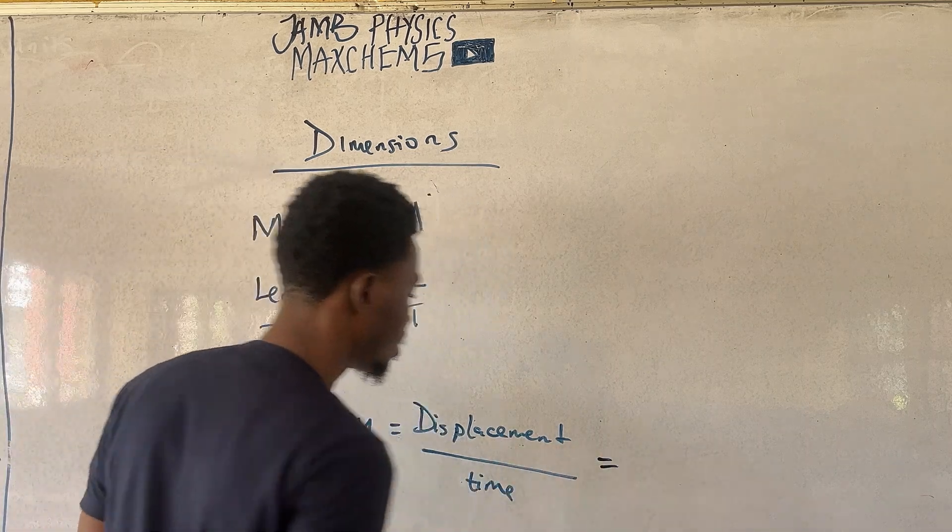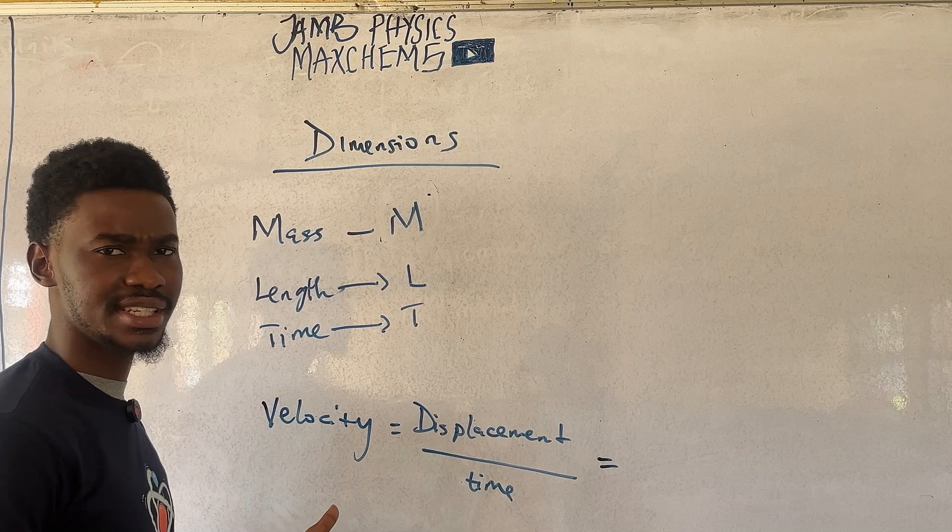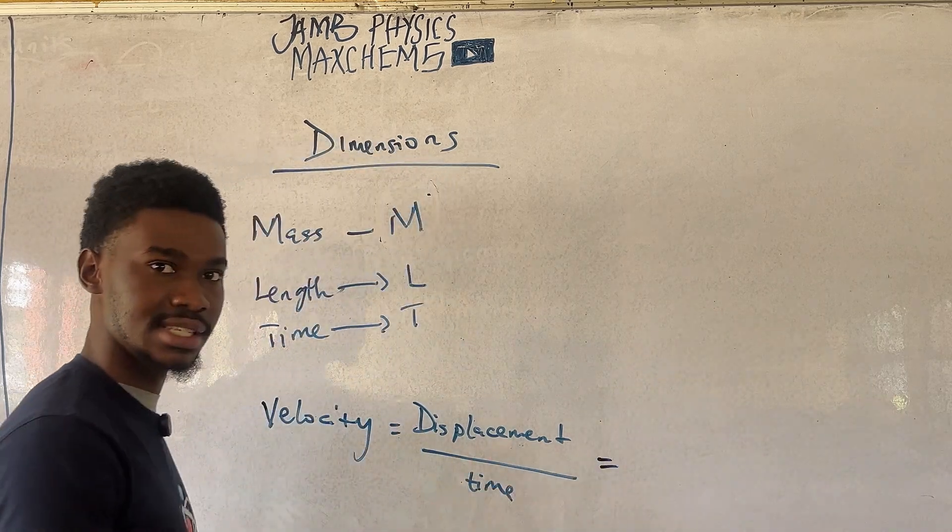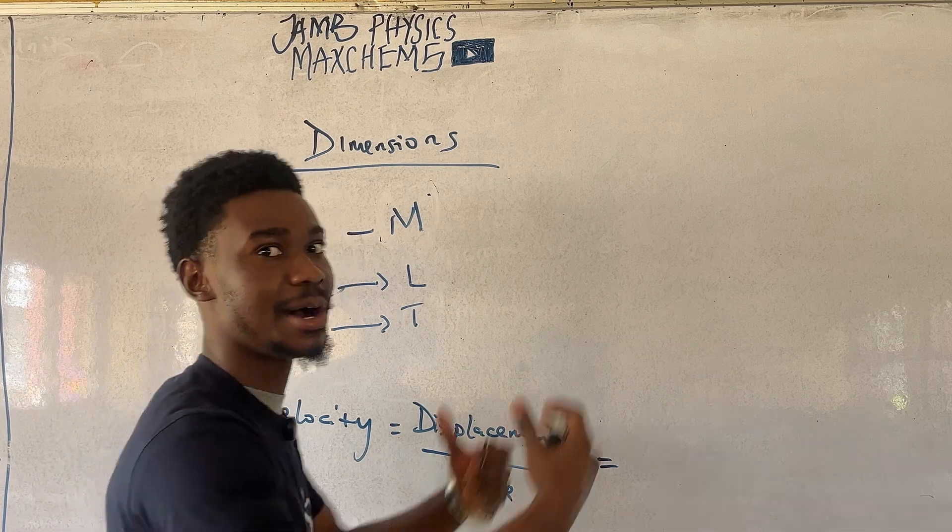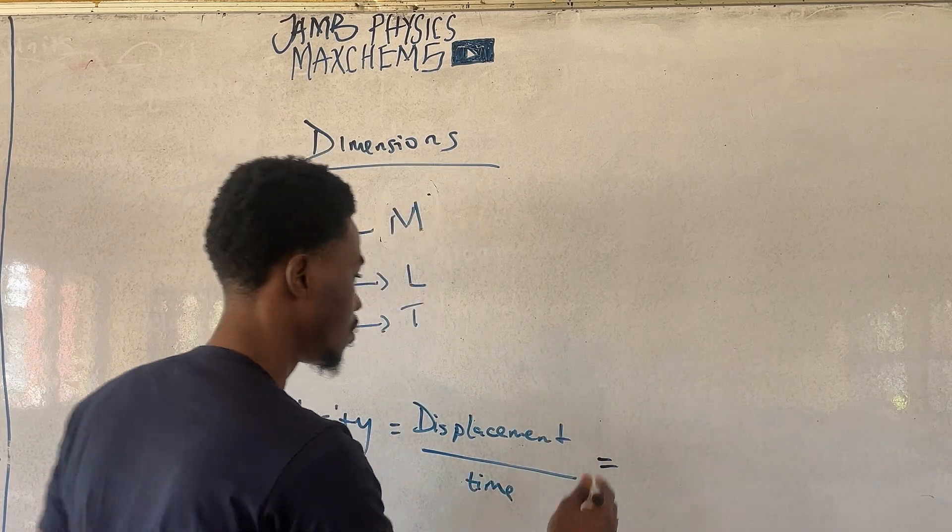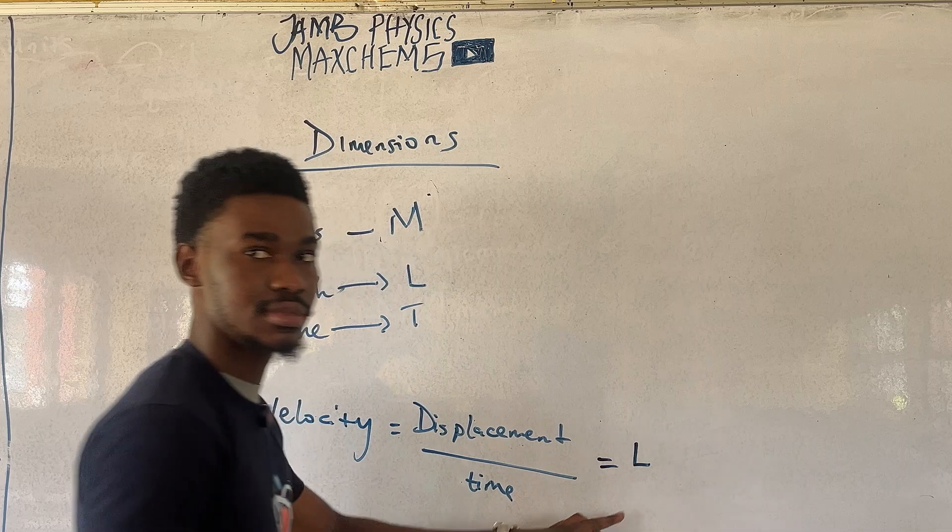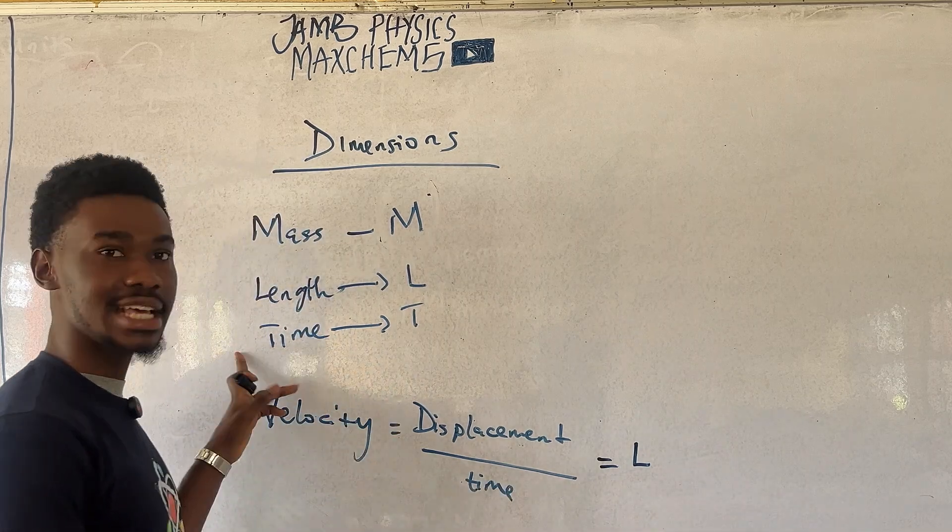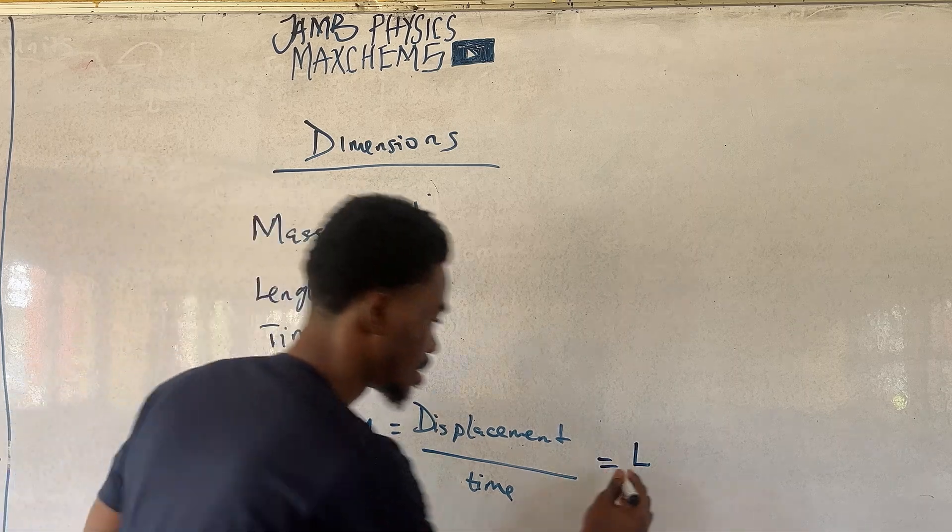But what is displacement? It is distance traveled in a specified direction. That means, since we are talking about distance, we are talking about length. Indirectly. So, it will be L as the dimension. How about time? Like I said earlier, time, the dimension for time is T.